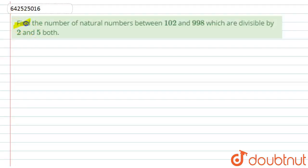Here we have to find the number of natural numbers between 102 and 998 which are divisible by 2 and 5 both.